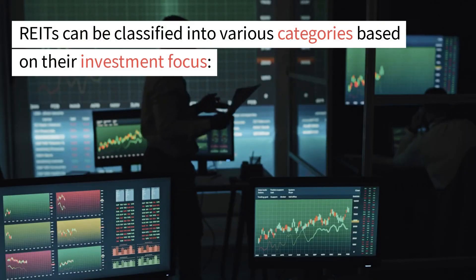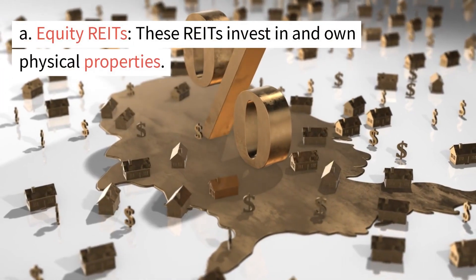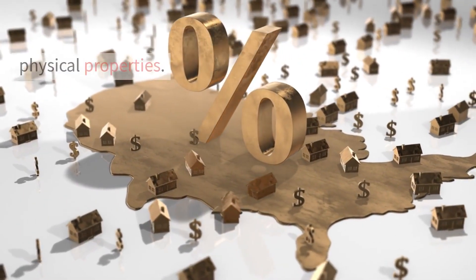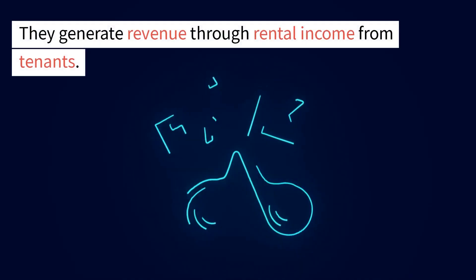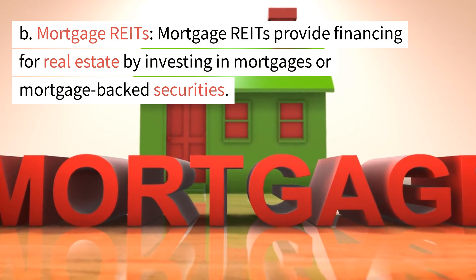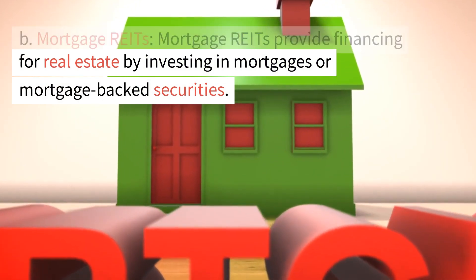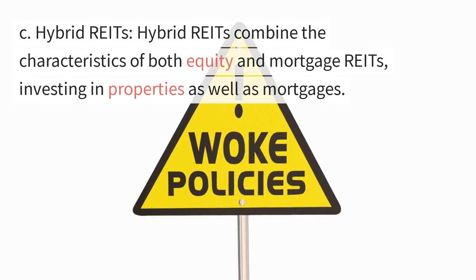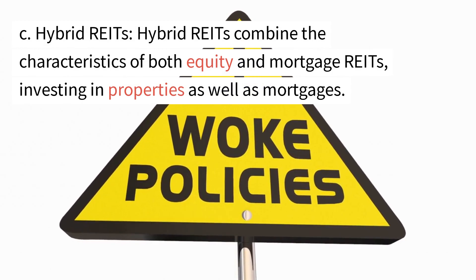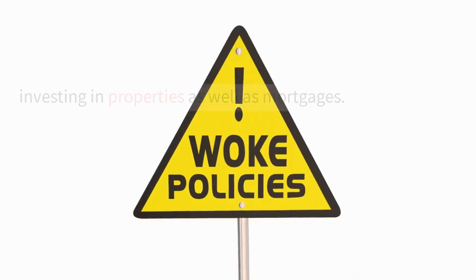REITs can be classified into various categories based on their investment focus. A. Equity REITs invest in and own physical properties, generating revenue through rental income from tenants. B. Mortgage REITs provide financing for real estate by investing in mortgages or mortgage-backed securities. C. Hybrid REITs combine the characteristics of both equity and mortgage REITs, investing in properties as well as mortgages.